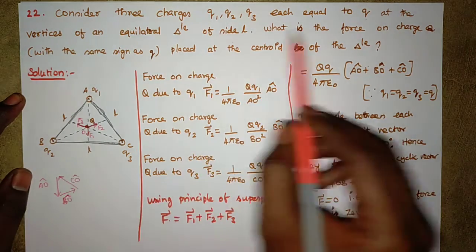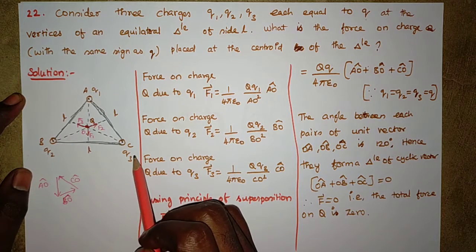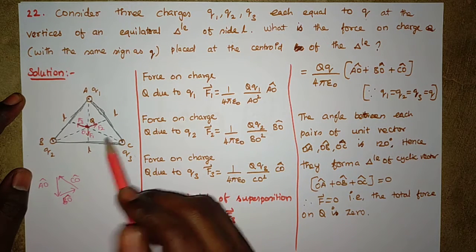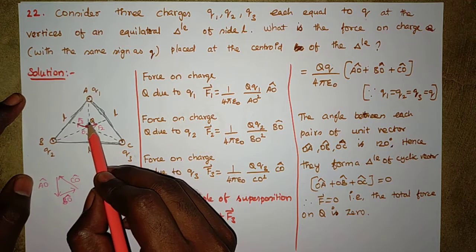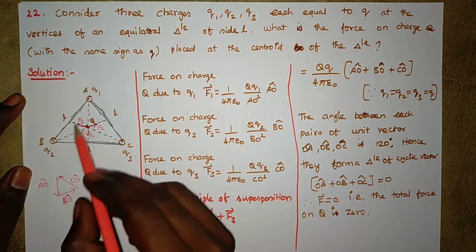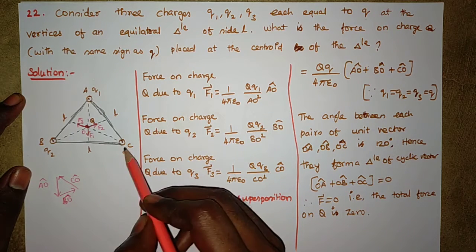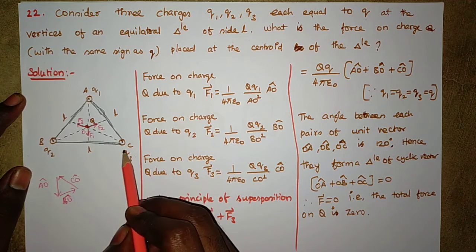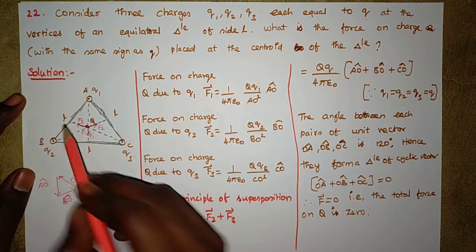Solution: If the centroid of the triangle is at the center with Q1, Q2, Q3 at the vertices, then charge Q is at the center. Let F1, F2, F3 denote the forces on Q due to Q1, Q2, and Q3 respectively.